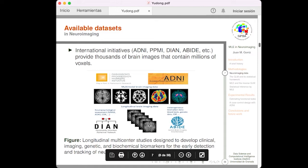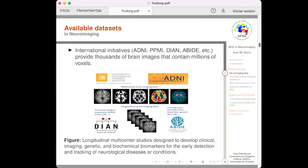Well, in this work and in other papers published by my group in recent years, we usually use standardized imaging data sets such as ADNI, DIAN, PPMI, etc. They provide up to thousands of images and millions of predictors. They are longitudinal multicenter studies designed to develop clinical imaging, genetic and biochemical biomarkers for the early detection and tracking of neurological diseases and conditions.